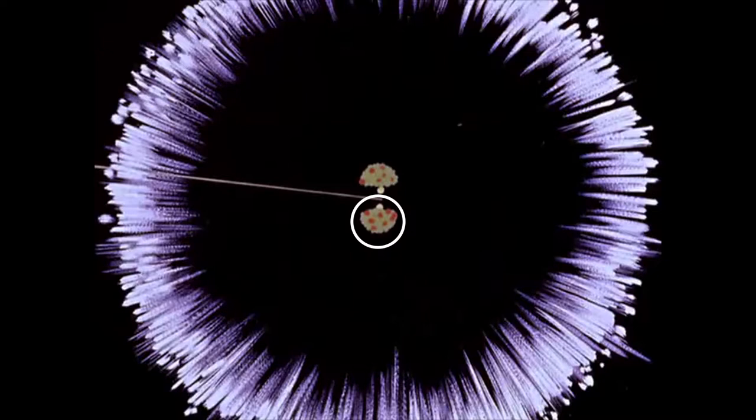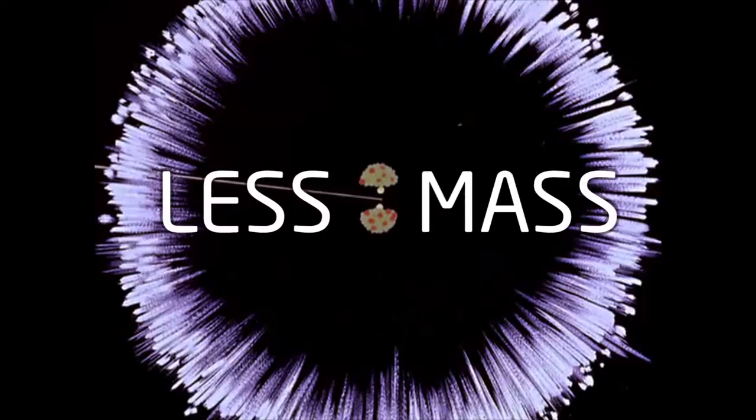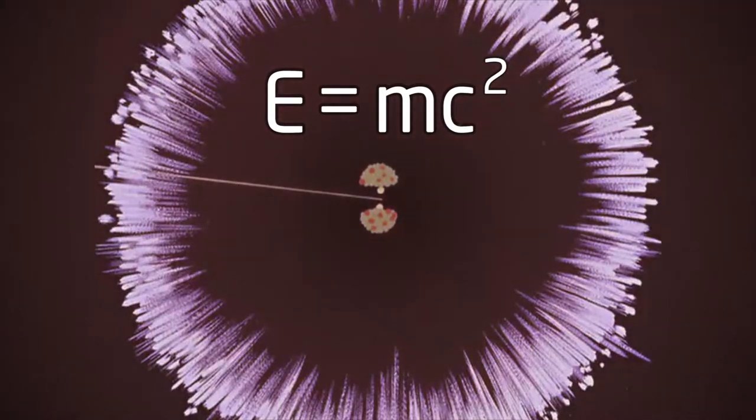When the fissile uranium atom split apart, those two parts combined were lighter than the original uranium atom. The missing mass was converted into energy.